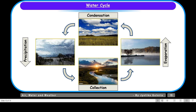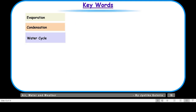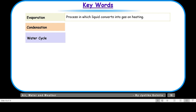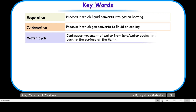That was all about the water cycle. Now let us move on to the key words. Evaporation: the process in which liquid converts into gas on heating. Condensation: the process in which gas converts to liquid on cooling. Water cycle: the continuous movement of water from land or water bodies to the sky and back to the surface of the Earth.